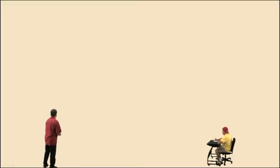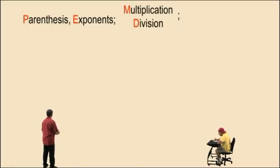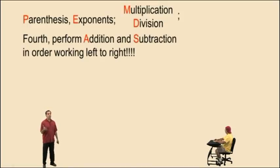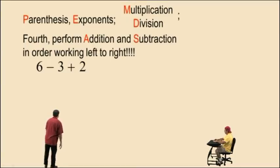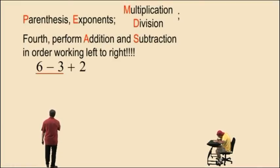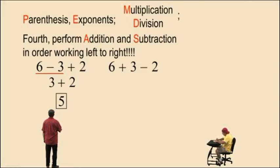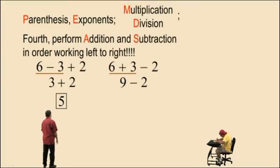Now we have parentheses, exponents, multiplication and division working left to right. And now we have the fourth step. Fourth, perform addition and subtraction in order working left to right, whichever comes first. And those are all four categories of the order of operations. So let's look at this problem. Notice we have a subtraction and an addition. Working left to right, subtraction comes first, so we must perform that operation first. 6 subtract 3 is 3. And 3 plus 2 is 5. Here we have an addition and subtraction, but addition comes first working left to right. Therefore, we perform that operation first. That gives us 9 subtract 2, which is 7.